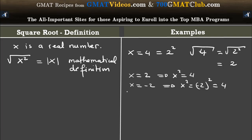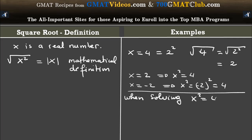Be careful here, because if you're given a question where you have to solve x squared equal to 4, then x is equal to 2 or x is equal to negative 2. This is an entirely different question — it is not the same as asking what is the square root of 4. If you are asked the square root of 4, it's a unique value, and that unique value is the positive root: 2. But if you're asked to solve x squared equal to 4, you have two opposite values: x equals 2 or x equals negative 2.